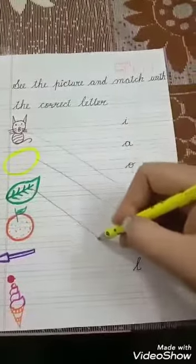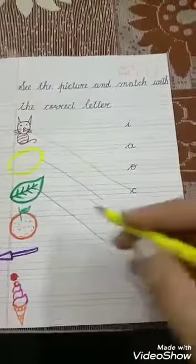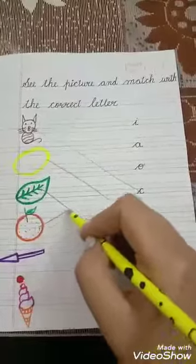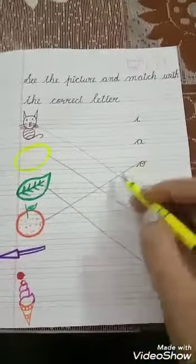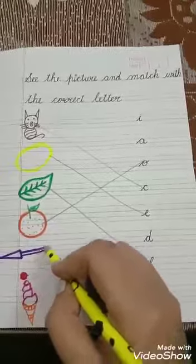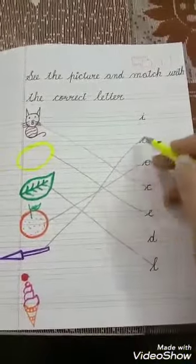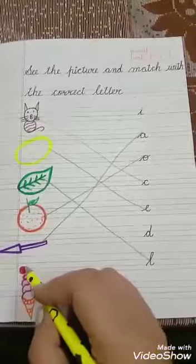L, leaf. Very good. O, O, orange. Very good. A, arrow. Very good.